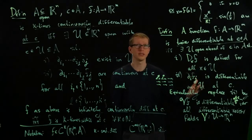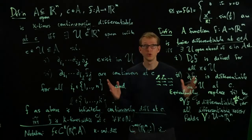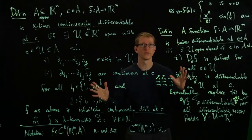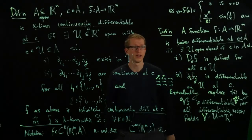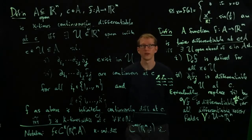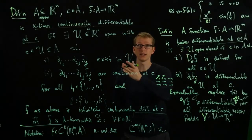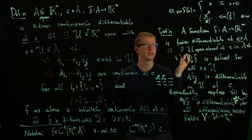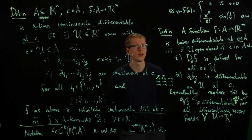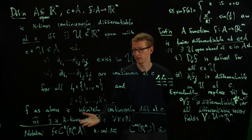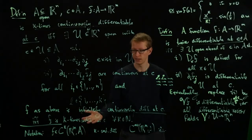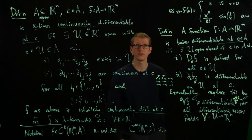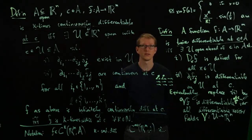Now we have two different classes of functions: continuously differentiable functions versus ordinary differentiable functions. We already have an example showing that for finite k, k-times continuously differentiable is not equivalent to k-times differentiable. But you might wonder what happens as k goes to infinity — is an infinitely continuously differentiable function the same thing as an infinitely differentiable function? I'll leave that as an exercise.